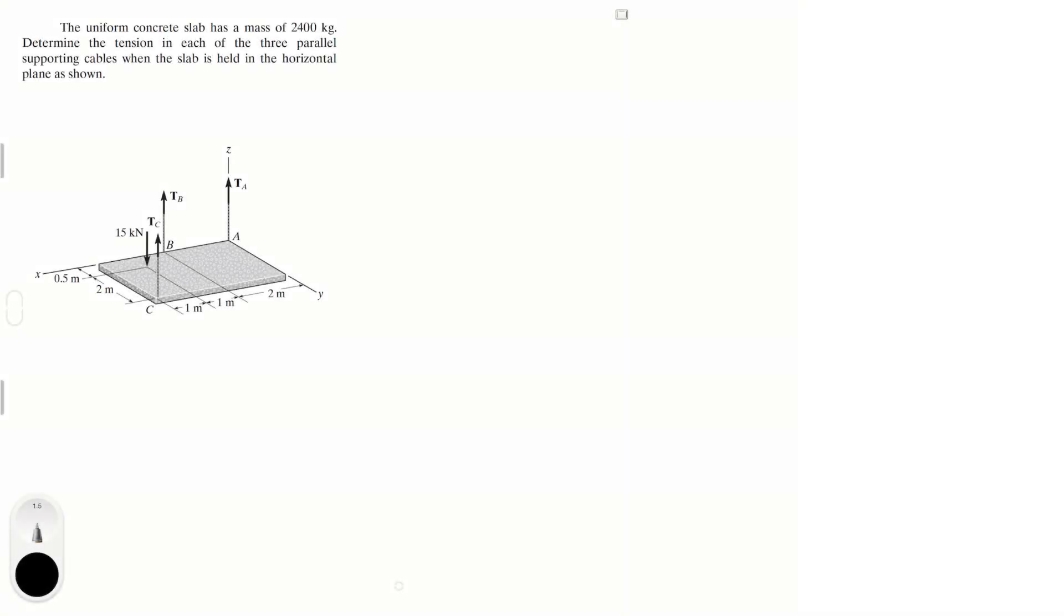Hello guys, now we're going to do this problem that says the uniform concrete slab has a mass of 2400 kilograms. Determine the tension in each of the three parallel supporting cables when the slab is held in the horizontal plane as shown.